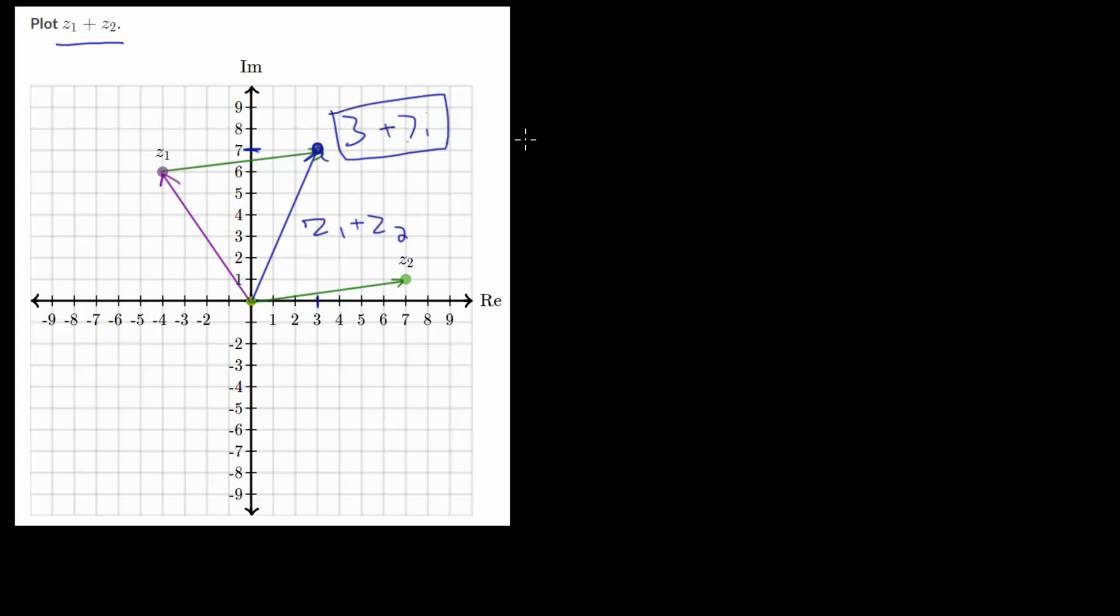The way to check this is to rewrite both vectors in terms of their real and imaginary parts. This is 7 plus 1i, and vector Z1 is minus 4 plus 6i. When writing it like this, we can add using arithmetic. We add the real parts: minus 4 plus 7 is 3. We add the imaginary parts: 6i plus 1i gives us 7i. Either way you approach this, we get the same answer: 3 plus 7i. Using both methods is a great way to check.